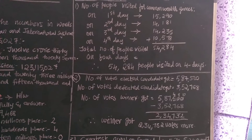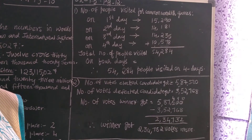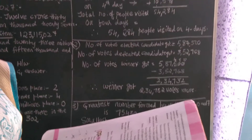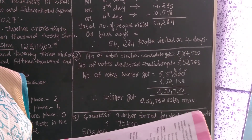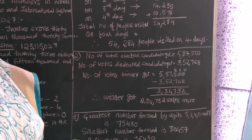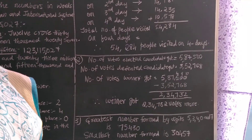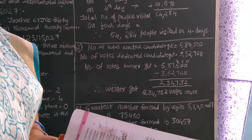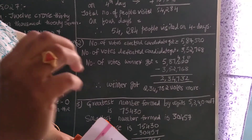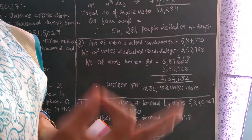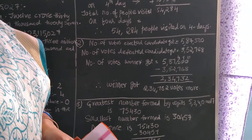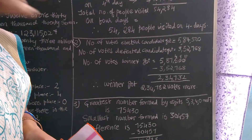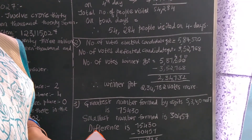Second problem — in Lok Sabha election, the elected candidate got five lakh eighty-seven thousand five hundred votes, and the defeated candidate got three lakh fifty-two thousand seven hundred and sixty-eight. By how many votes did the winner win the election? By how many means you have to subtract.